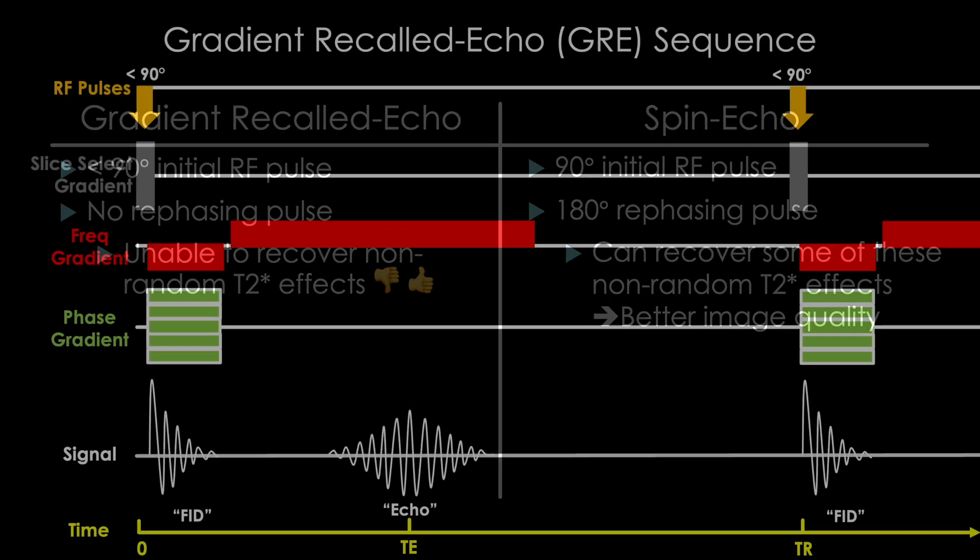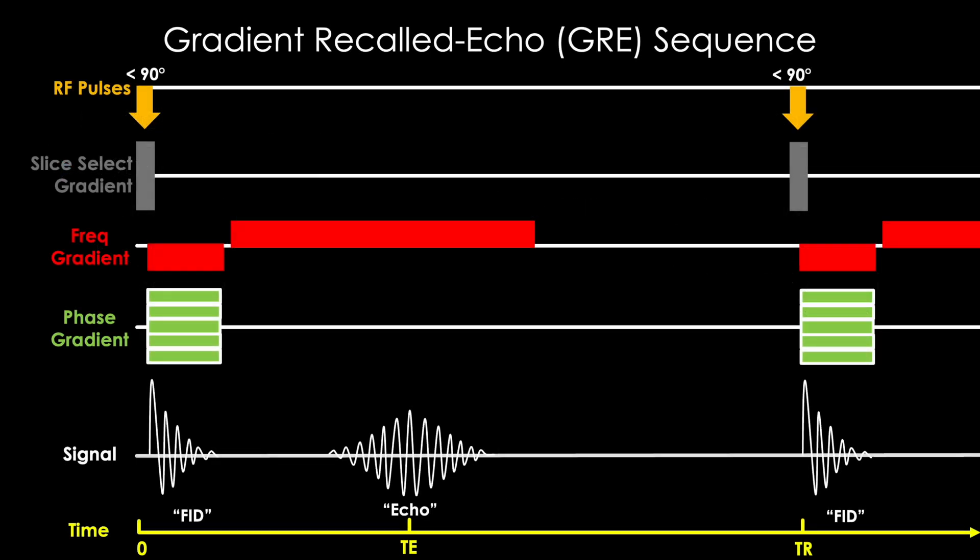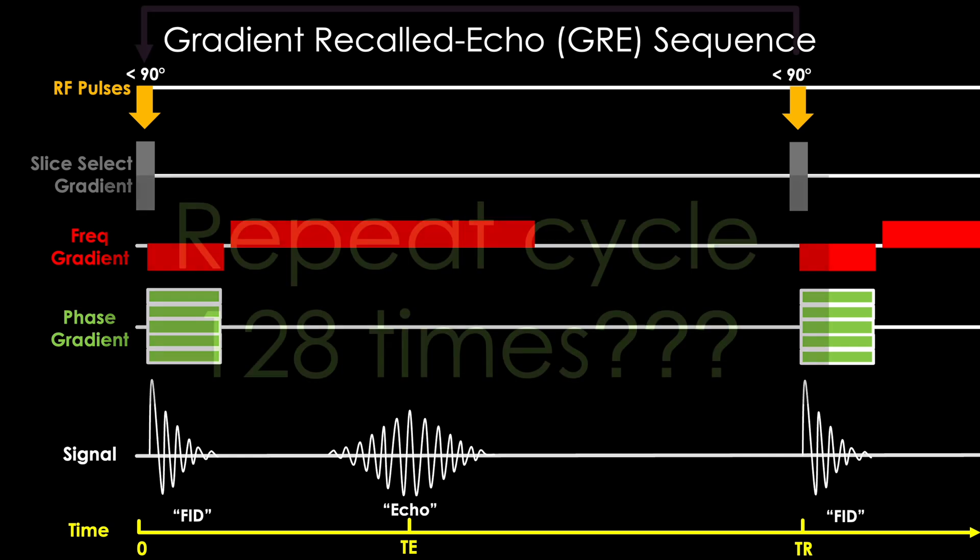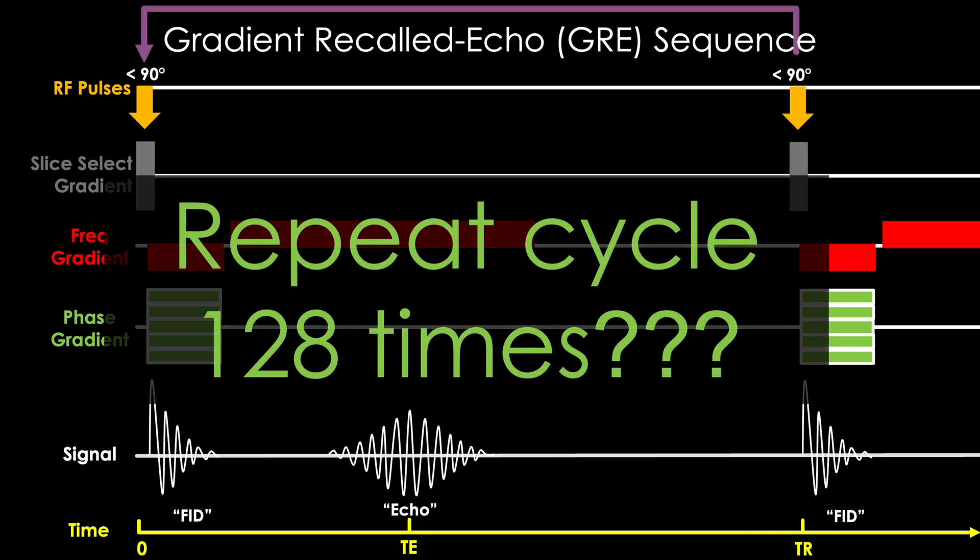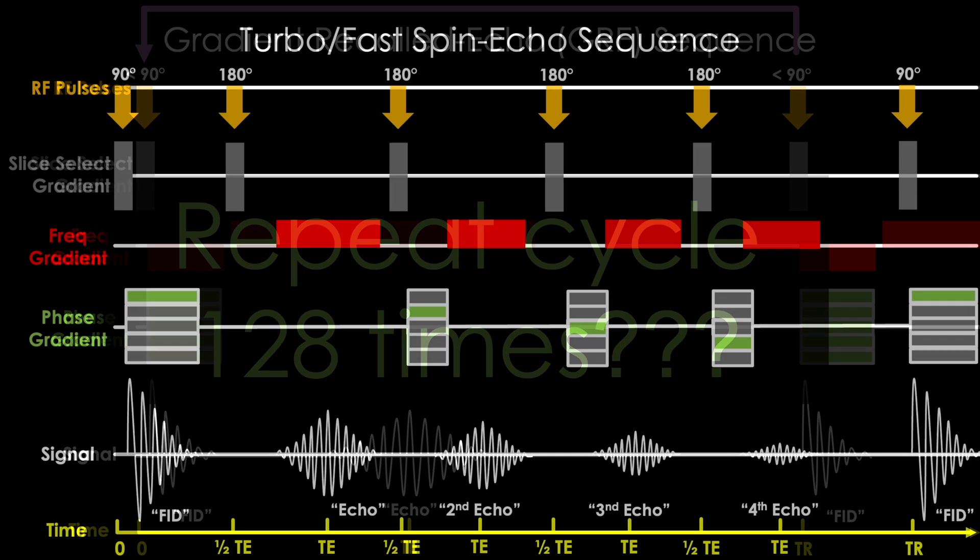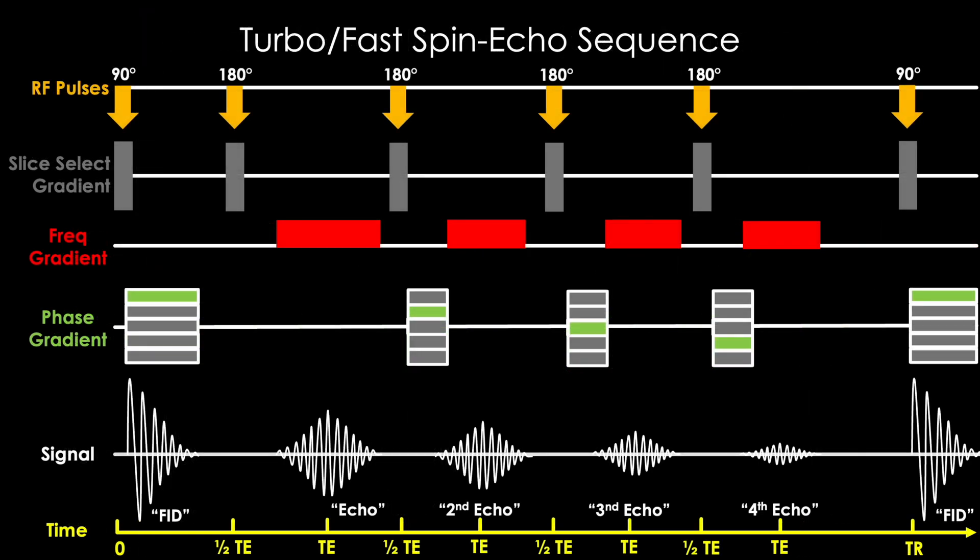A few more things to wrap up the lecture. As it stands with this basic GRE sequence, we run into the same problems with imaging time that we encountered with our standard spin echo sequence. Namely, in order to generate an image, we'd need to repeat this cycle at least 128 times. Not optimal. So for the instance of the spin echo sequence, we spent a dedicated lecture pioneering this turbo fast spin echo technique where we generated multiple echoes in a row by repeating these 180 degree rephasing pulses at one half TE.